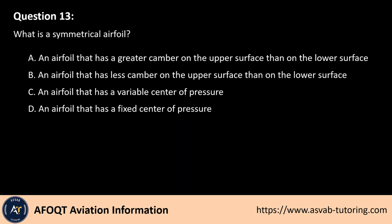Question 13. What is a symmetrical airfoil? A. An airfoil that has a greater camber on the upper surface than on the lower surface. B. An airfoil that has less camber on the upper surface than on the lower surface. C. An airfoil that has a variable center of pressure. D. An airfoil that has a fixed center of pressure.